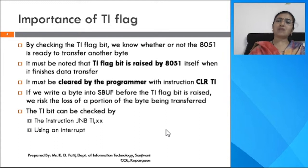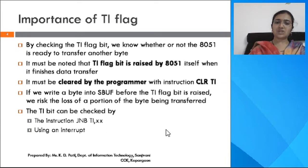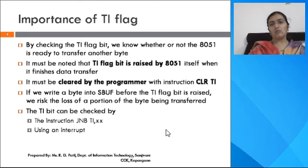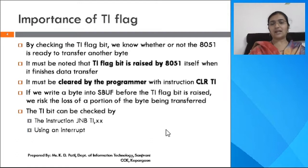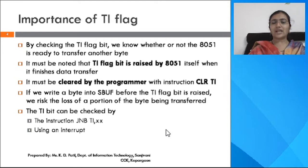The TI flag can be monitored using two methods: the polling method and the interrupt method. In the polling method, you continuously monitor the TI flag using the instruction JNB TI, target. In the interrupt method, whenever data is completely transferred via the TXD line, the 8051 raises the TI flag, a serial communication interrupt is triggered, and the microcontroller calls the interrupt service routine to handle it.